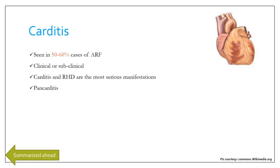Carditis is a pancarditis, meaning it involves all three layers of the heart: the pericardium, myocardium, and endocardium. Involvement of the endocardium is a must; myocarditis and/or pericarditis without endocarditis is almost never rheumatic in origin. This is an important point to remember.